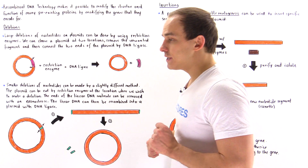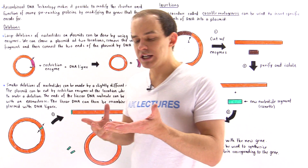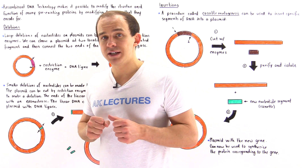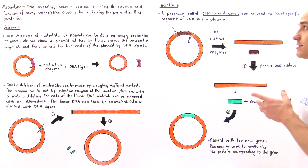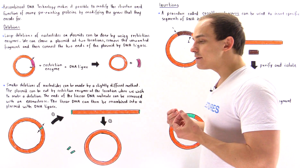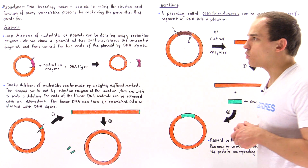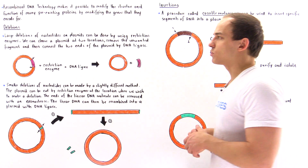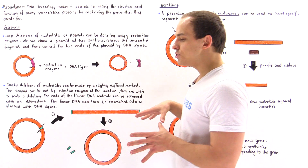There are three types of modifications that we can commonly make to our gene. We can modify the gene by deleting a segment of DNA, by inserting a segment into that gene, or by substitution. In this lecture, we're going to focus on deletions and insertions. In the next lecture, we're going to discuss substitutions. So let's begin with deletions.